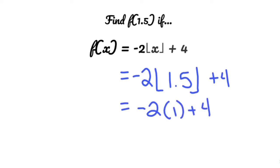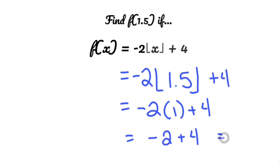Negative 2 times 1 plus 4 is negative 2 plus 4. Negative 2 plus 4 is 2, and that's it.